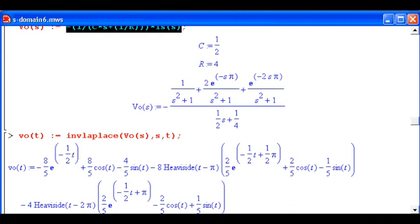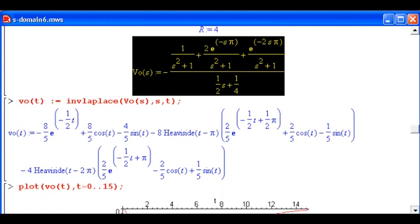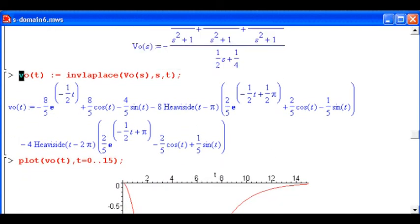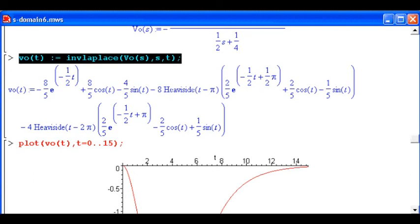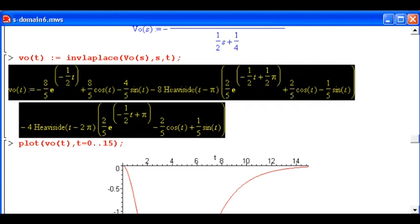So V out of S has that rather large-ish sort of form. We'll convert that back to the time domain. Gets even bigger. Let's try to get the whole thing displayed there. There we go.